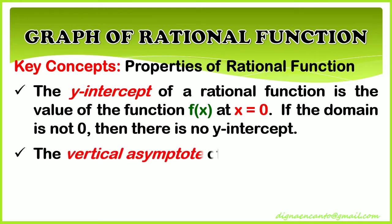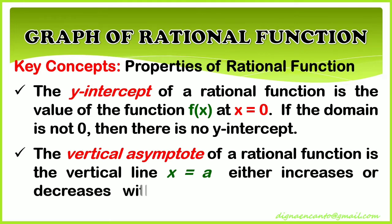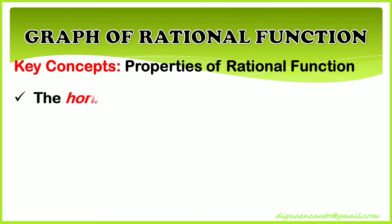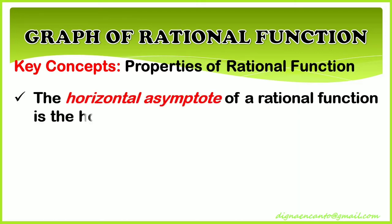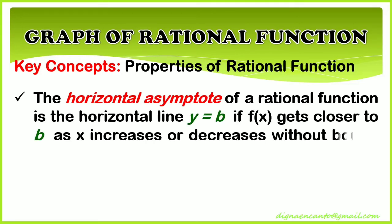The vertical asymptote of a rational function is the vertical line x equals a, where the function either increases or decreases without bound as the x values approach a from the right or left. The horizontal asymptote is the horizontal line y equals b, if f(x) gets closer to b as x increases or decreases without bound — that is, as x approaches infinity or negative infinity.